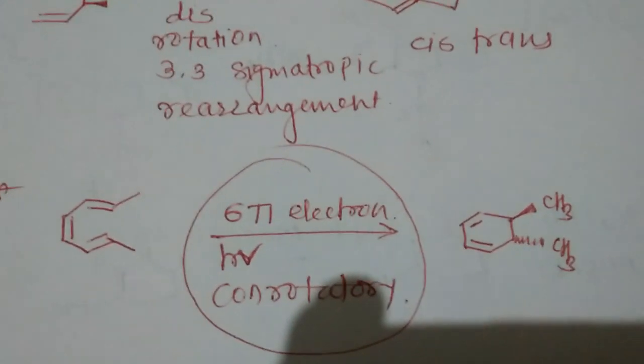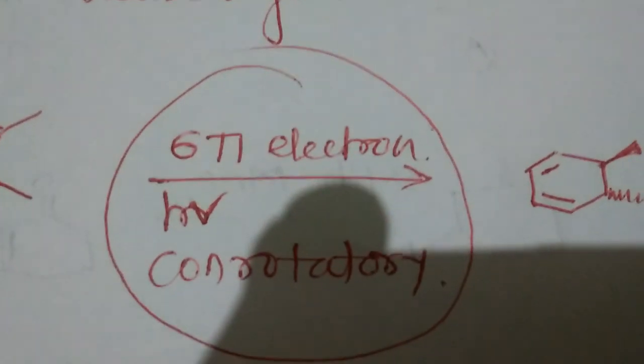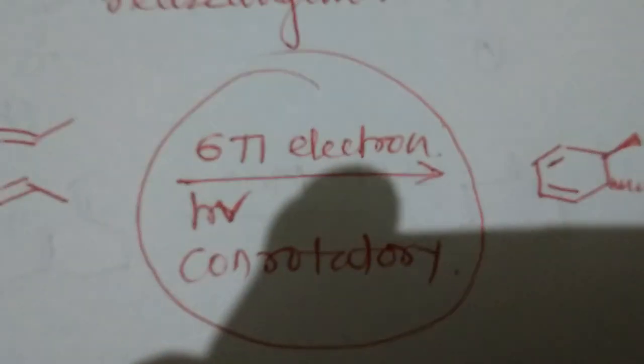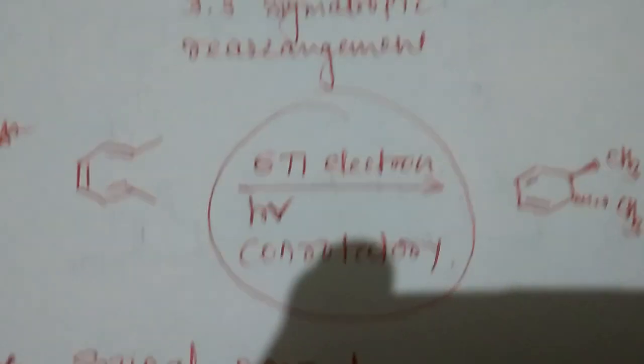The 6 pi electron system photochemically with conrotation is the correct answer for this one. For the next question, we can discuss spinal compounds and whether those compounds are spinal or inverse spinal.